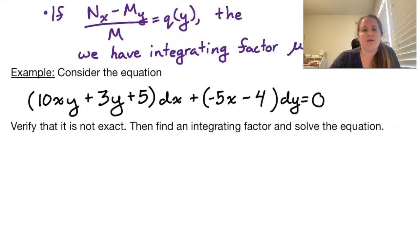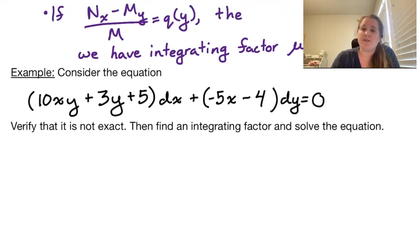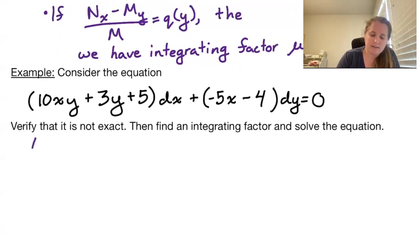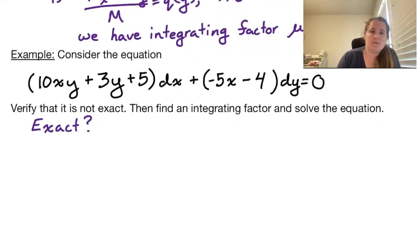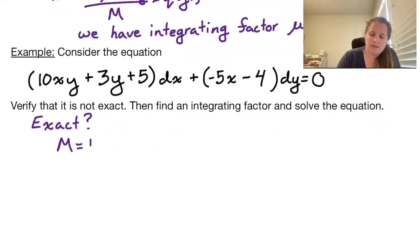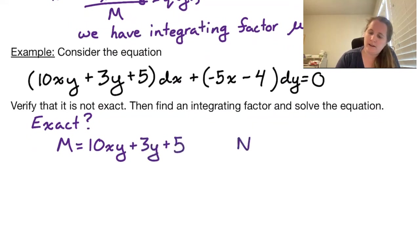First, let's consider the equation (10xy + 3y + 5) dx + (-5x - 4) dy = 0. The first thing to do is verify this equation is not exact. Our M is 10xy + 3y + 5, and our N is -5x - 4.